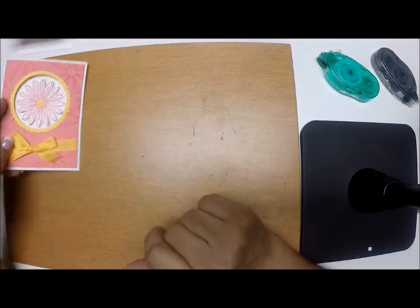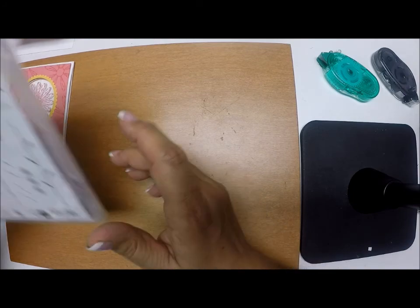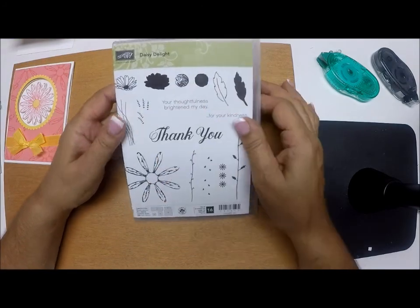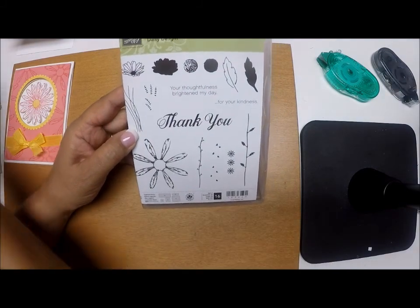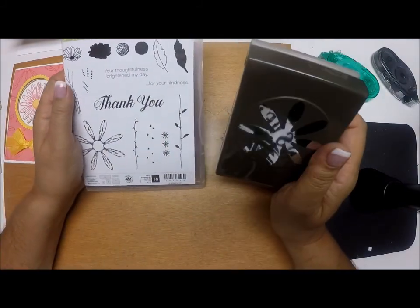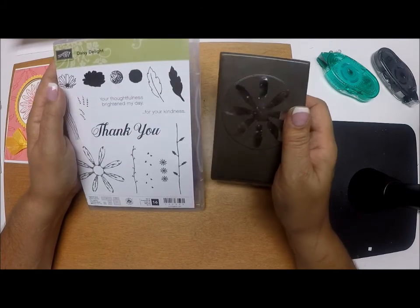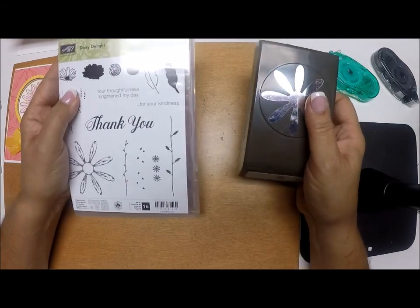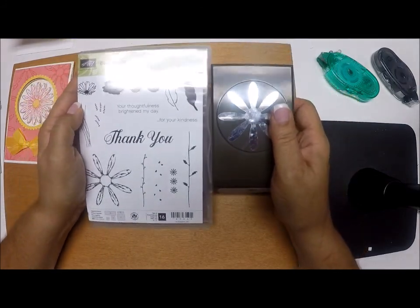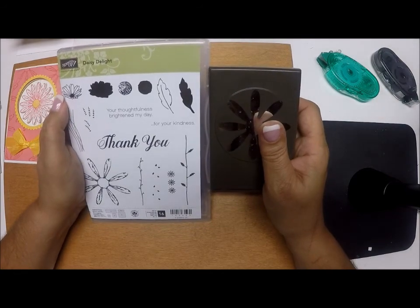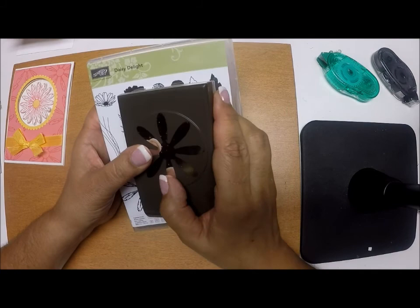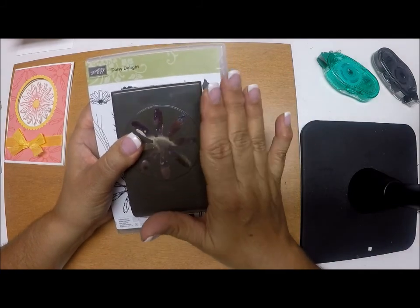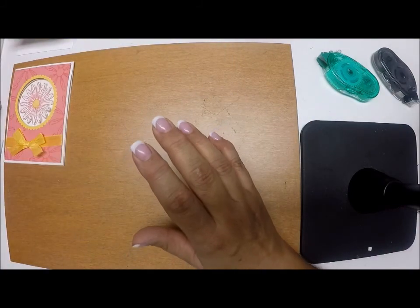So what we need for supplies is the Daisy Delight stamp set. We're going to use the daisy and the little insert. And it has a coordinating punch, which is the daisy punch, and these are available as a bundle. The bundle is called the Delightful Daisy bundle. And when you order them as a bundle, you get 10% off the price if you were to buy them separately.